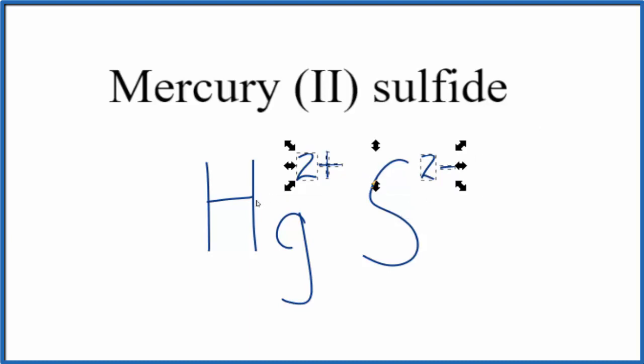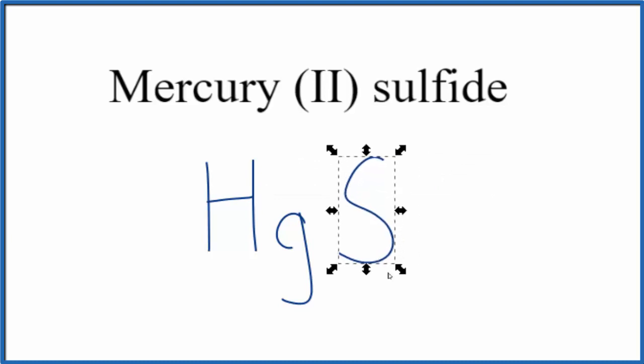So the formula for mercury(II) sulfide, that's just HgS. This is Dr. V with the formula for mercury(II) sulfide. Thanks for watching.